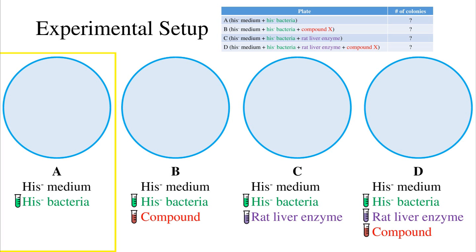There is a normal spontaneous mutation rate — one mutation in every 100 million base pairs. There's slipped mispairing, trinucleotide repeat expansion, or contraction. This reverse mutation from hist-minus to hist-plus allows them to synthesize their own histidine and thus survive on hist-minus medium. Plate B has the compound in addition to the hist-minus bacteria and the hist-minus medium.